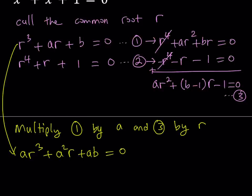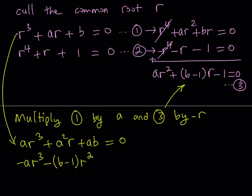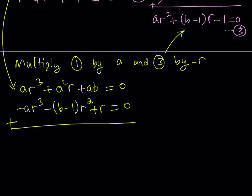Now the third equation will be multiplied, but we're going to subtract it. So instead of subtraction, I'll multiply equation number three by negative R and add. Multiplying equation number three by negative R gives us negative AR cubed, then minus the (B minus one) quantity times R squared, and positive R equals zero. Now we add these two equations — R cubed cancels out and we get a quadratic equation in R.